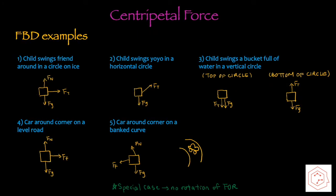Here are some examples of free body diagrams. The first one is when a child swings a friend around in a circle on the ice. Assuming ice is frictionless, the normal force is in the upwards direction and gravitational force is in the downwards direction, whereas the tension is the horizontal force, which provides the centripetal force.